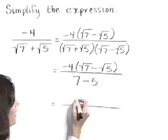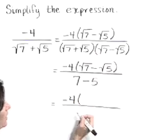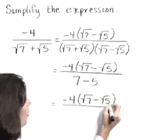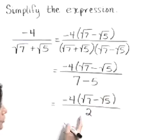Subtracting your values in the denominator is going to give negative 4 times the square root of 7 minus the square root of 5 over 2.